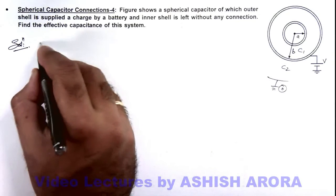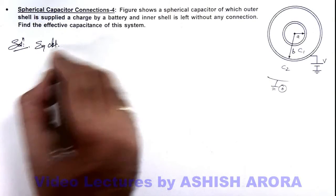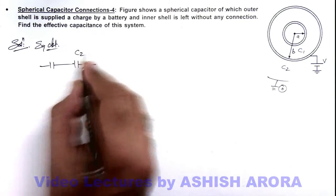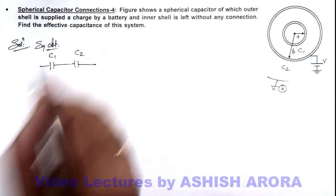In this situation, if we draw the equivalent circuit, this equivalent circuit will again be drawn as a combination of C1 and C2.